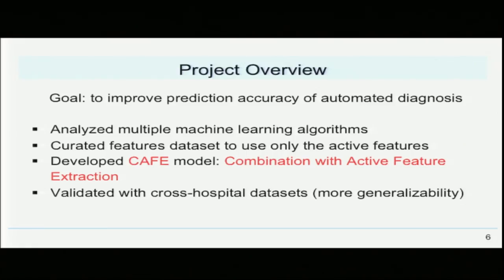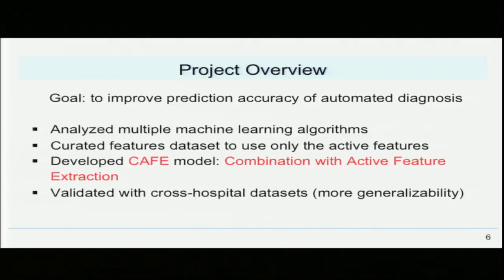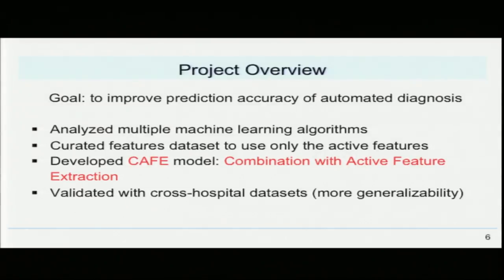We addressed these limitations in our study to improve tumor diagnosis accuracy. We did this by first analyzing multiple machine learning algorithms, then creating our features dataset to eliminate redundant features and use only the important active features. We developed our CAFE model — Combination of Algorithms with active Feature Extraction — and finally validated our model with datasets from different hospitals, ensuring its generalizability.